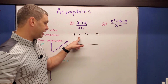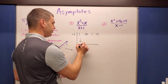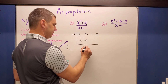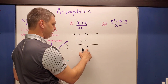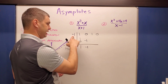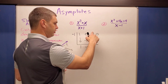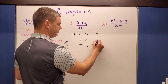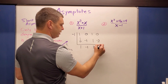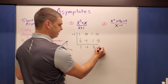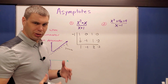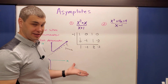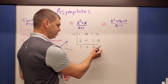Performing the synthetic division: bring down the one. One times negative one is negative one; zero plus negative one is negative one. Negative one times negative one is positive one; one plus one is two. Two times negative one is negative two; zero plus negative two is negative two. One key concept with slant asymptotes: when you synthetically divide, you do not use the remainder.